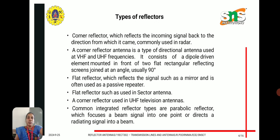A corner reflector antenna is a type of directional antenna used at VHF and UHF frequencies. It consists of a dipole driven element mounted in front of two flat rectangular reflecting screens joined at an angle, usually 90 degrees. A flat reflector, which reflects the signal like a mirror, is often used as a passive repeater and in sector antennas. Corner reflectors are used in UHF television antennas. The common integrated reflector type is the parabolic reflector, which focuses a beam signal into one point or directs a radiating signal into a beam.